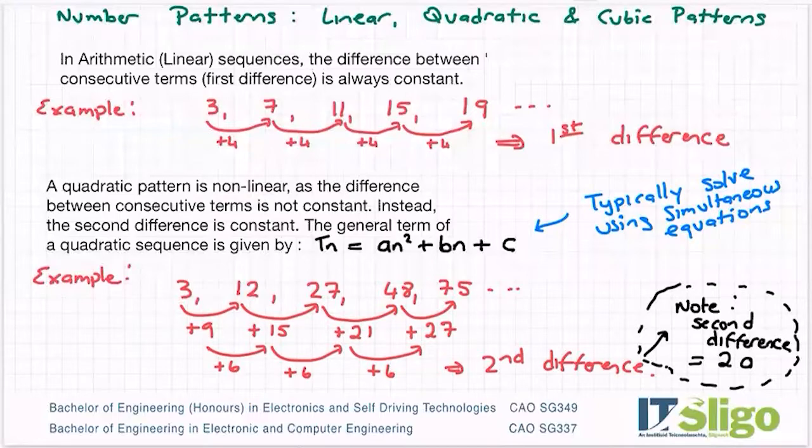To evaluate the sequence further or figure out what type of pattern we have, we look at the difference of the difference, also called the second difference. The difference between the first and second term was 9, the difference between the second and third term was 15, so the difference between these two differences is 6. Between the next two we had 15 and 21, the difference is also 6; between 21 and 27, the difference is also 6. We conclude that the second difference is the same, therefore the sequence is quadratic or a quadratic pattern.